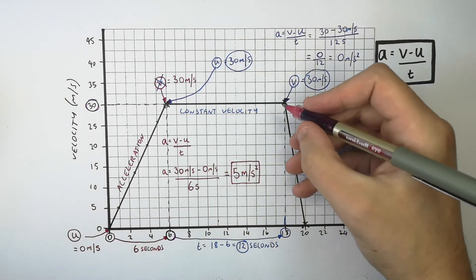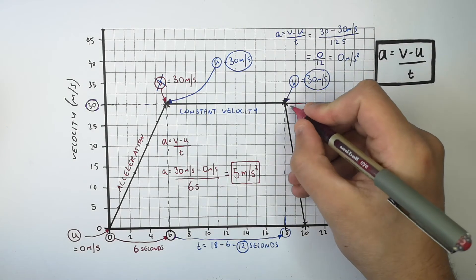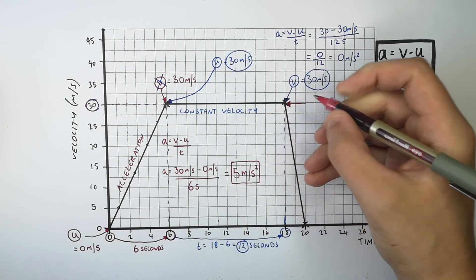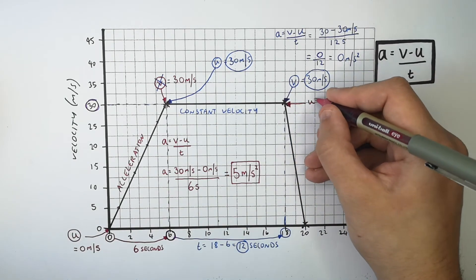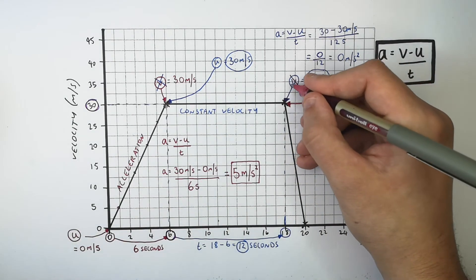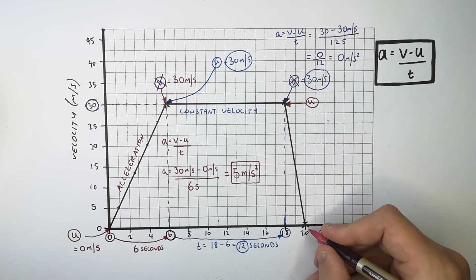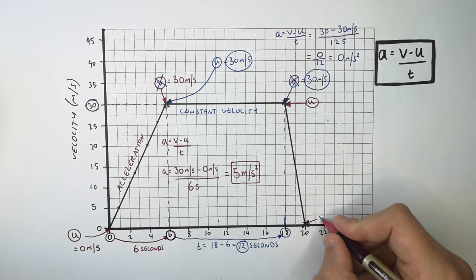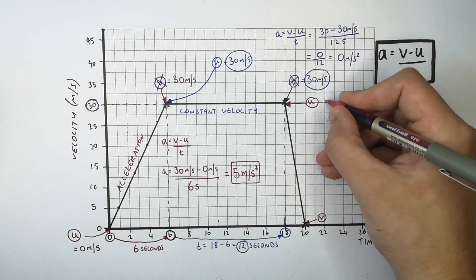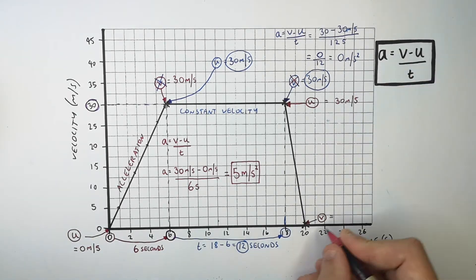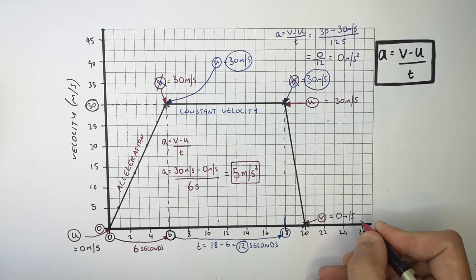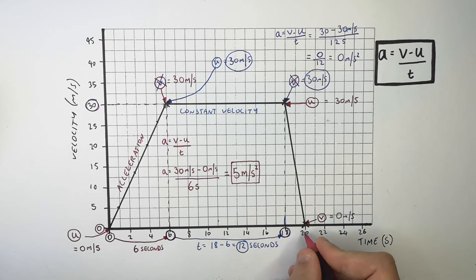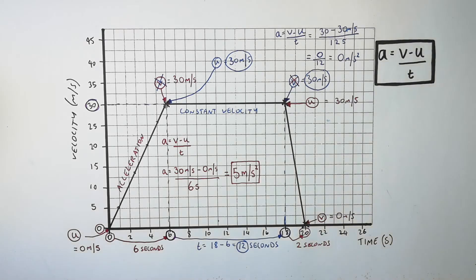We're now going to calculate the acceleration between 18 seconds and 20 seconds. The initial velocity u is 30 metres per second, and the final velocity v is 0 metres per second. The time is 20 seconds minus 18 seconds, which is 2 seconds. So the car went from 30 metres per second to 0 metres per second in 2 seconds.